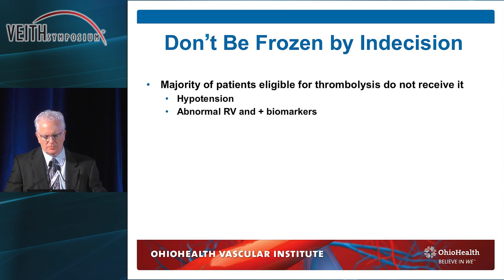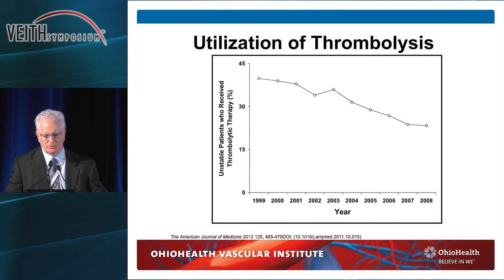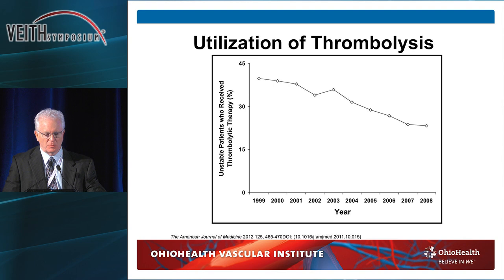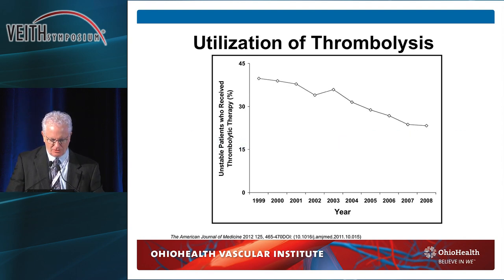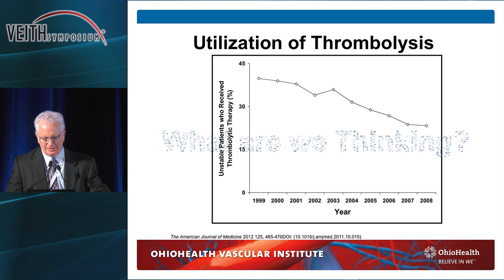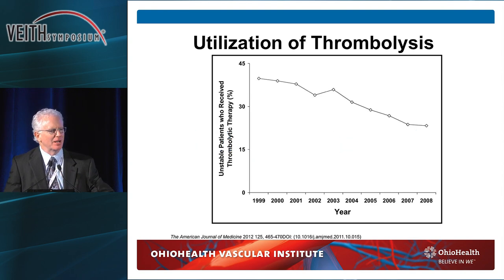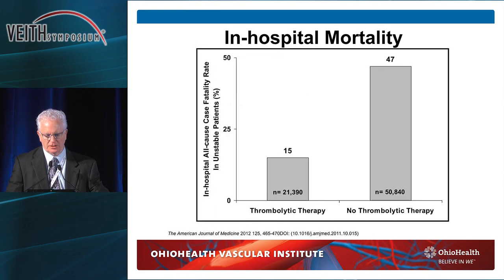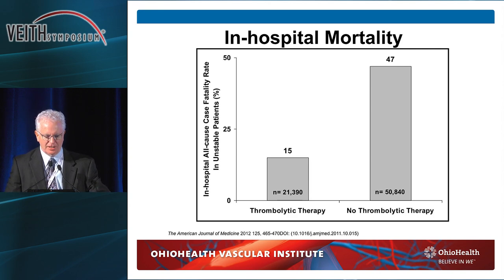Certainly, many patients with hypotension, abnormal RV, and biomarkers just aren't getting this. If you look at utilization of thrombolysis — this is before we had these big thrombectomy devices — we were seeing a decrease in utilization. It blows my mind in this day and age of increased medical education and literature support. If you look at patients that were really unstable in this American Journal of Medicine article from 2012, if they were unstable and didn't get thrombolytic therapy, they had a pretty bad mortality rate versus those that got thrombolytic therapy. This is why we give systemic thrombolysis in the first place — this message has to get out there.